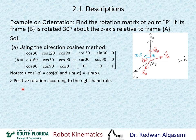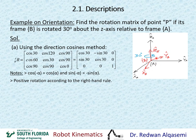The positive rotation must always follow the right-hand rule. If we are rotating 30 degrees about the Z-axis, put your thumb along the Z-axis direction and curl your four fingers — that gives the positive direction of rotation for XB and YB. Always apply the right-hand rule when performing rotations.